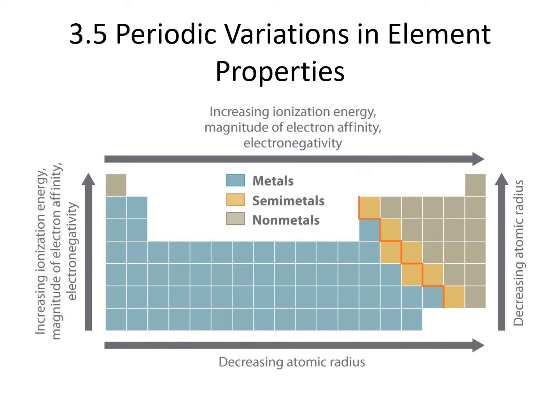We can use the periodic table to help us guess properties of different elements based on periodic trends. In this section, we will be looking at trends of atomic and ionic radius, ionization energy, and electron affinity. In the next chapter, we will look at one final trend: electronegativity.